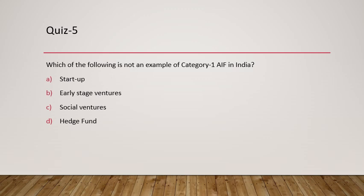Question 5: Which of the following is not an example of a Category 1 Alternative Investment Fund in India? We have three categories of AIFs — Category 1, 2, and 3. With that, we have completed five questions and I have shared the potential answers for those questions.